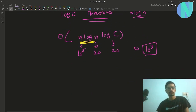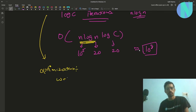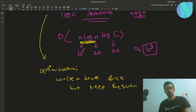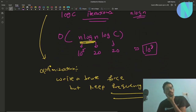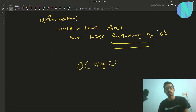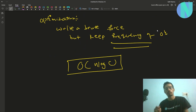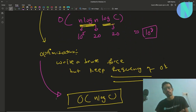The optimization is: write a brute force but keep a frequency counter for zeros instead of sorting them. That saves you from TLE. The strict bound for this approach is actually O(n log C), as explained in detail in the referenced comment.